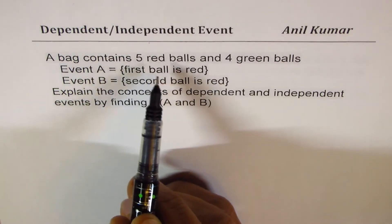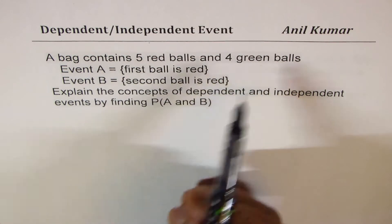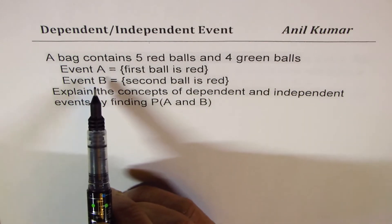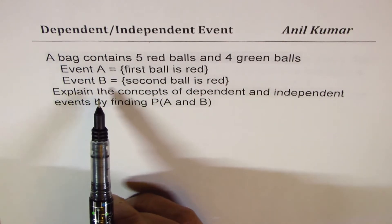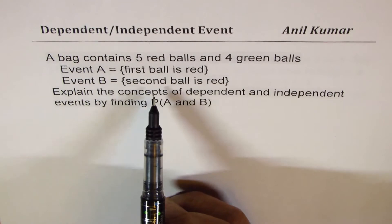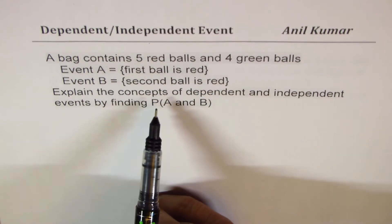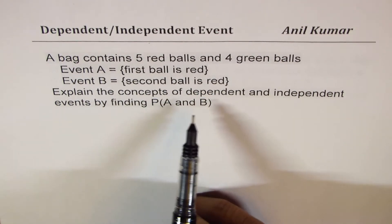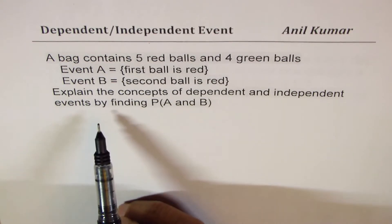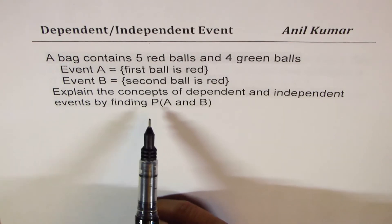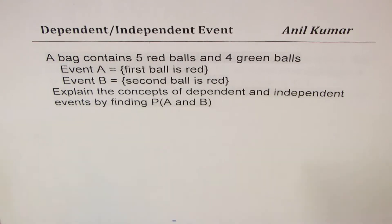A bag contains five red balls and four green balls. Event A: the first ball is red. Event B: the second ball is red. We will explain the concepts of dependent and independent events by finding the probability of A and B.